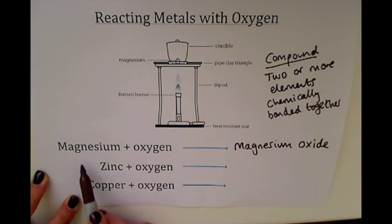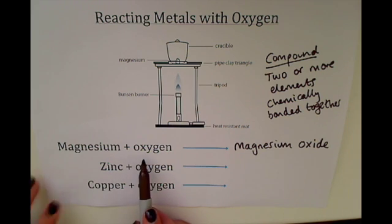So if you react magnesium, an element, with oxygen, another element, and they chemically bond together, this makes a compound called magnesium oxide.